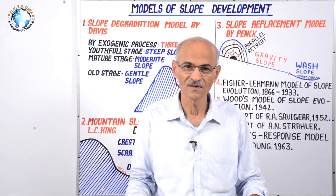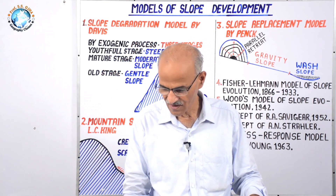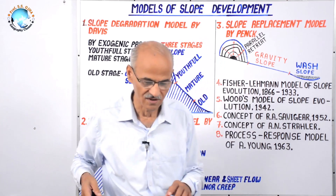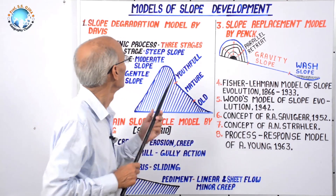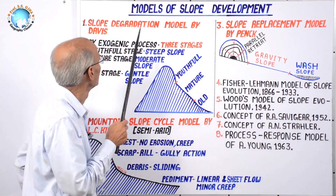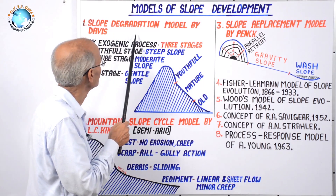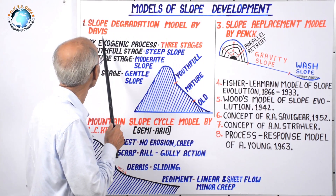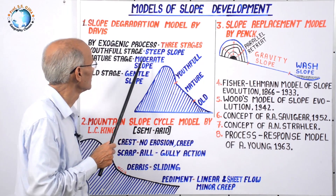Slope development models have been propounded by a number of geomorphologists. For example, the slope degradation model by W.M. Davis.